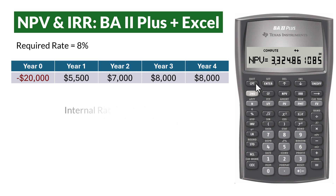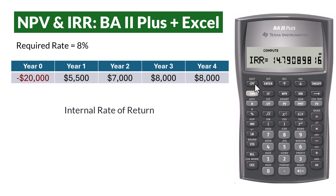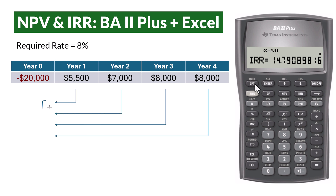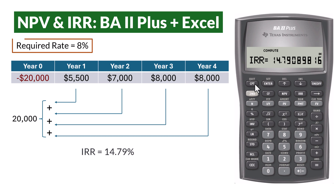To find the internal rate of return, press the IRR button and press Compute. The IRR is 14.79%, which is the interest rate that will make the NPV equal to 0 — that is, the rate that makes the sum of the present values of the inflows equal to $20,000. Since this IRR is higher than the required rate of return or cost of capital of 8%, the equipment should be purchased.